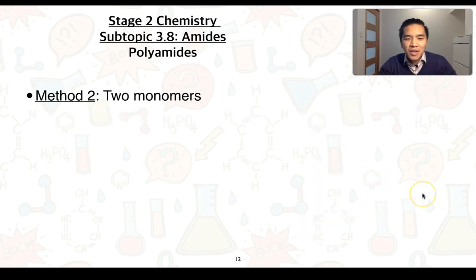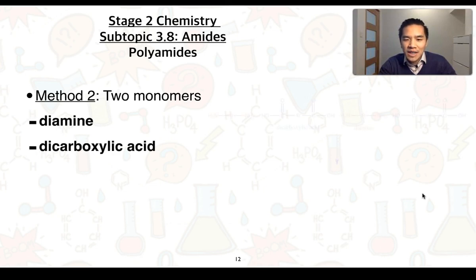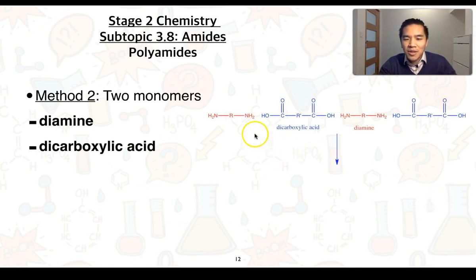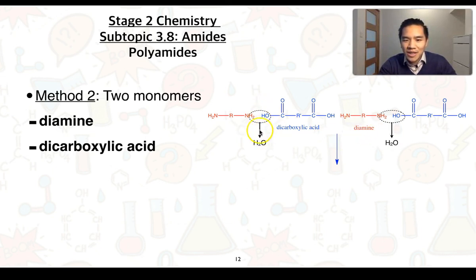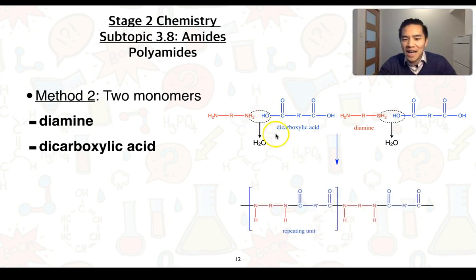For the case of two monomers, we have diamines and dicarboxylic acids. These molecules align and undergo condensation reactions which release water, and the monomer units join together to produce the polyamide.